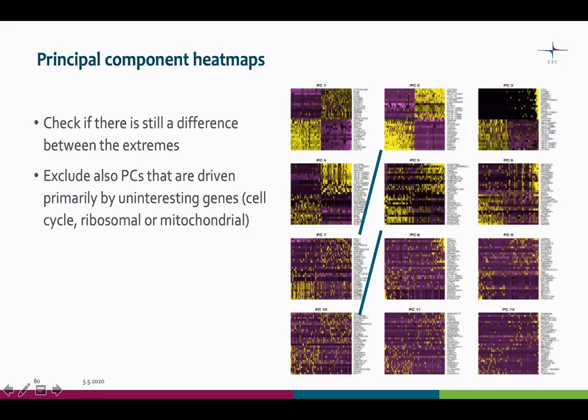You can also exclude principal components that are driven primarily by uninteresting genes. If you spot, for example, cell cycle genes, ribosomal genes, or mitochondrial genes in a principal component, that component might be responsible for those. Consider regressing out that kind of variation in your data.